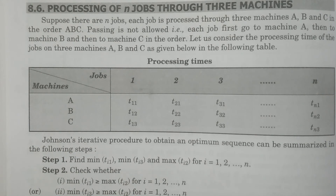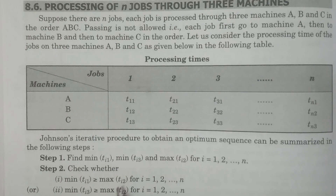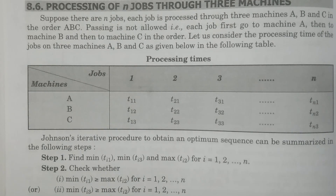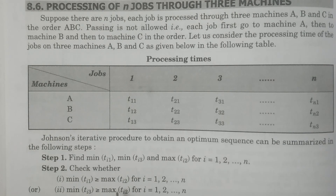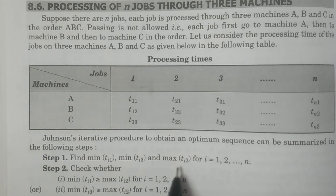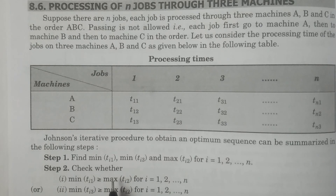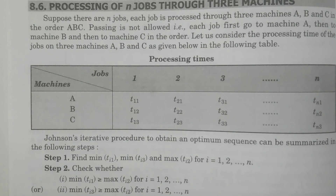In step two, check two conditions. Condition one: minimum of ti1 is greater than or equal to maximum of ti2. Condition two: minimum of ti3 is greater than or equal to maximum of ti2. Check whether the minimum processing times of the first and third machines are greater than or equal to the maximum processing time of the second machine. If both conditions are not satisfied, then the method fails.